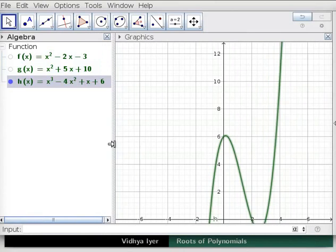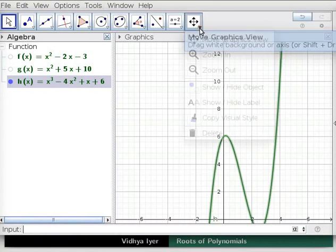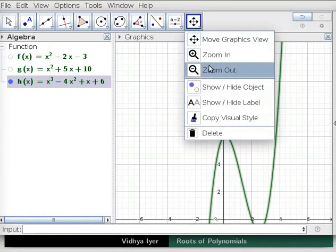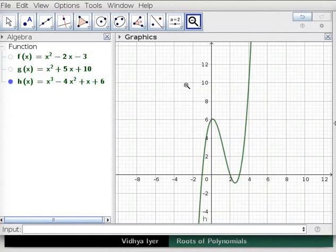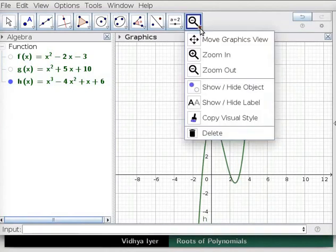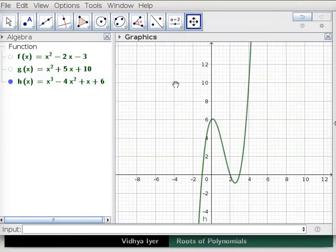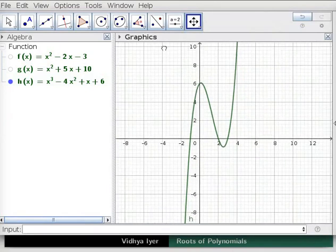Drag boundaries to see algebra and graphics views properly. Observe equation h of x in algebra view. Function h of x is graphed in graphics view. Under move graphics view, click on zoom out tool. Click in graphics view. Click on move graphics view and move graphics background to see the graph.